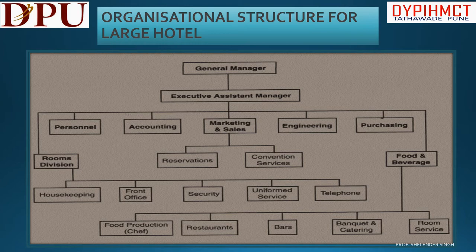Reservation and Convention Service come under the Sales and Marketing department. Housekeeping, Front Office, Security, Laundry, and Operator come under the Room Division department. This covers the organizational structure of any large or five-star hotel.